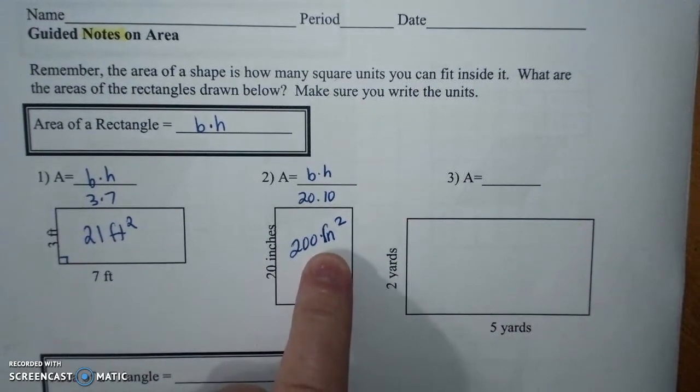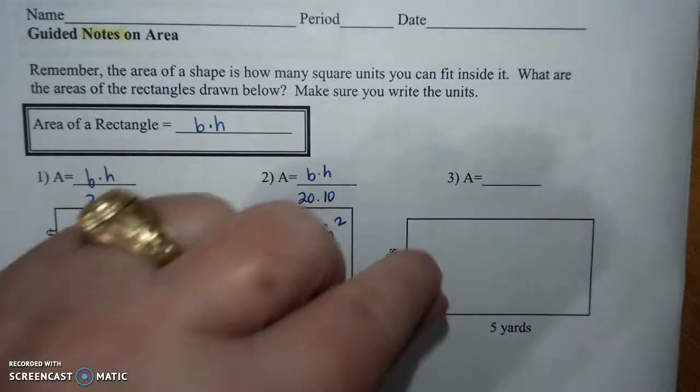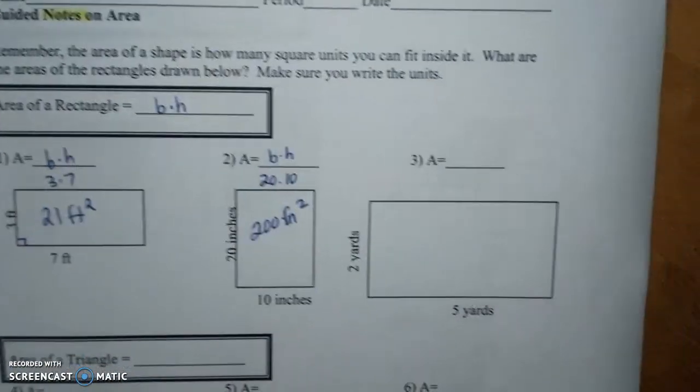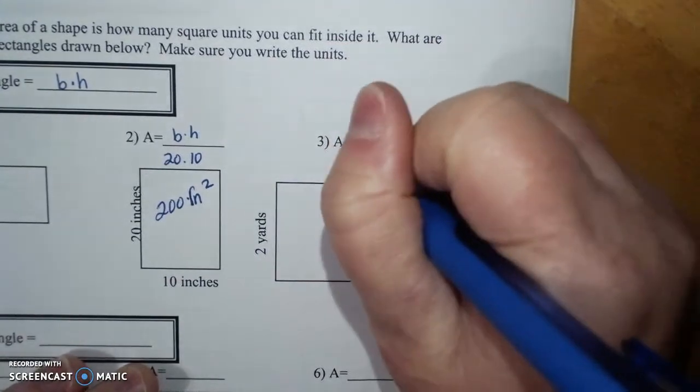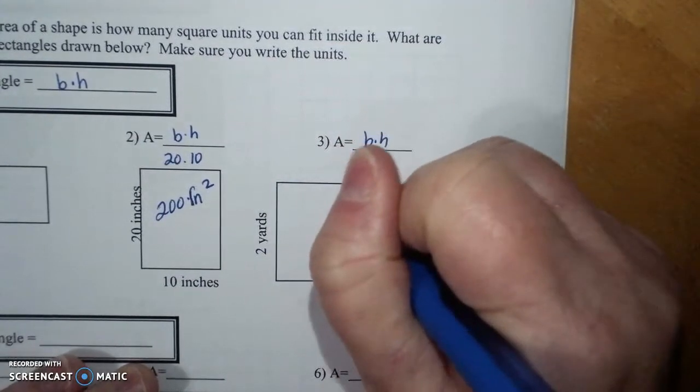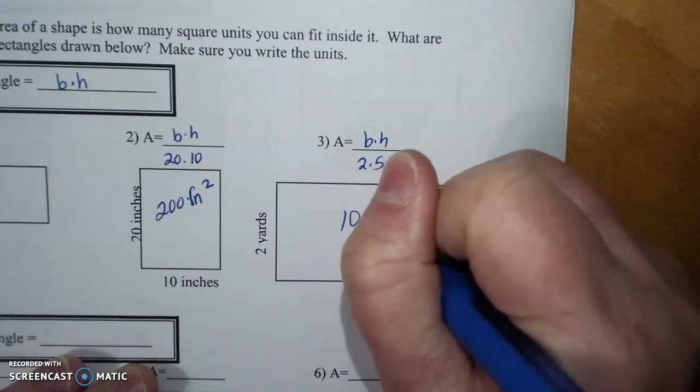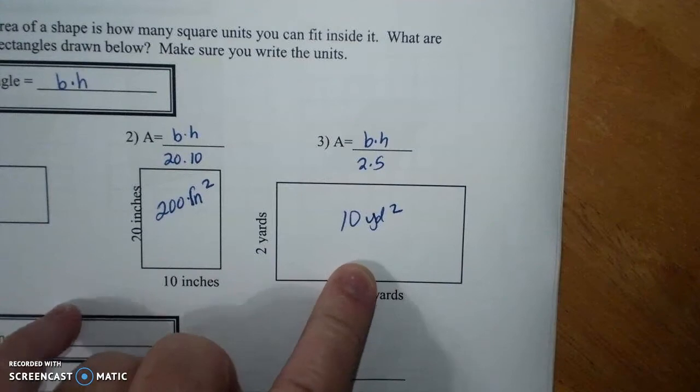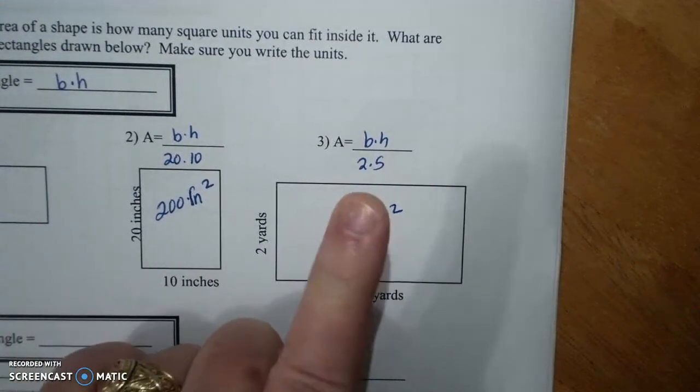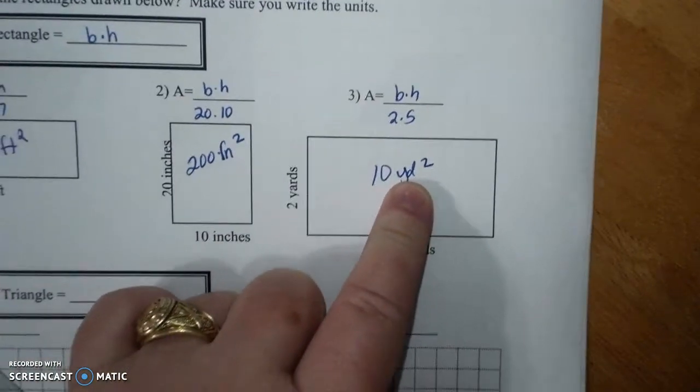Now, area is always square units. Because we're putting little tiny squares in these. This one is base times height. 2 times 5. 10 yards squared. Or 10 square yards. You can write it either way. Make sure you put your labels. Because area always has square units.